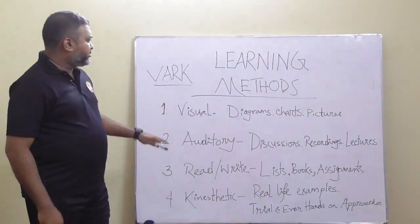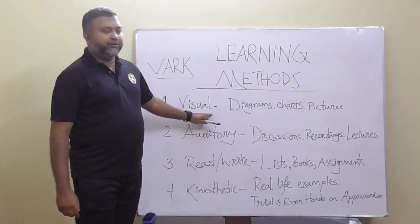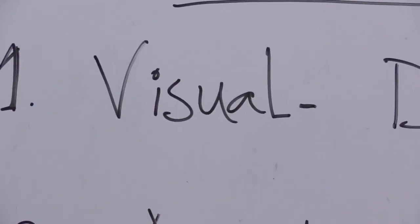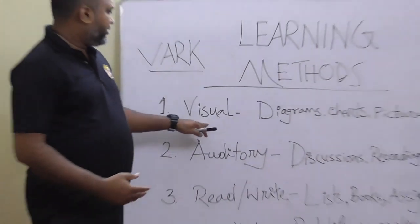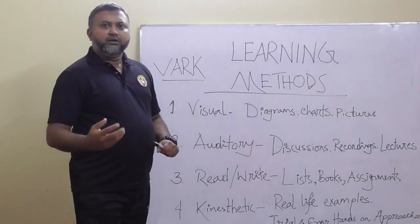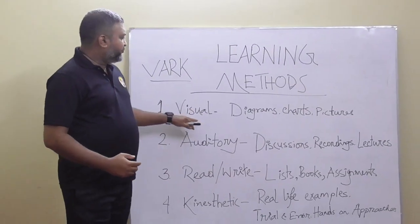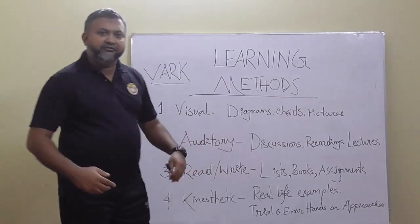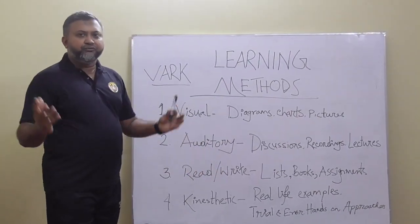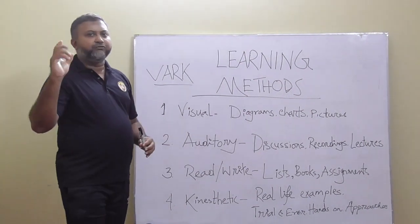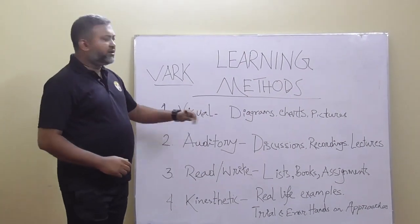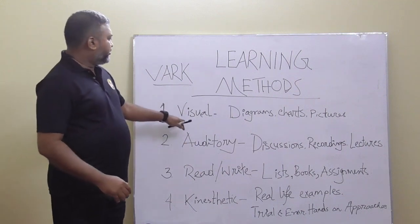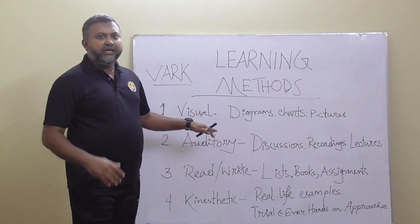Now I am going to discuss them one by one. V stands for Visual. Visual method is a modern method — in visual method we show diagrams, charts, pictures; we can even show movies, YouTube videos, and any sorts of documentary. These all fall under the category of visual method.